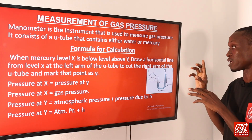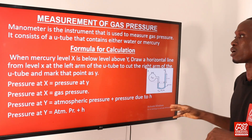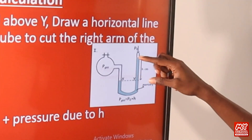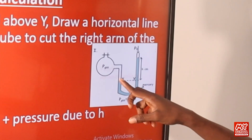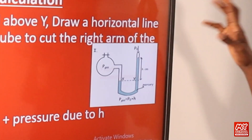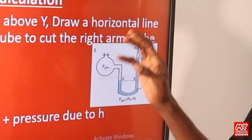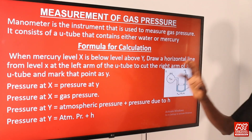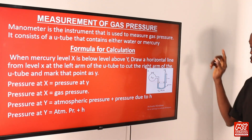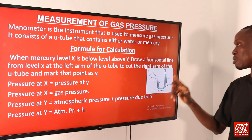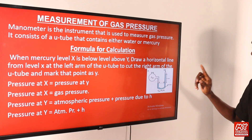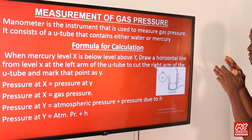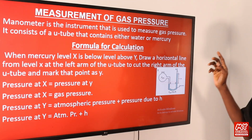We are going to use three cases, each depicted with a diagram as you can see on the screen. Case one: when the mercury level X is below level Y. As you can see in the diagram, the mercury level X in the left arm of the manometer is below the level of mercury Y in the right arm. You draw a horizontal line from X to cut the right arm of the U-tube and mark that point as S. The pressure at point S is equal to the pressure at point Y. The pressure at X is due to the gas pressure, since the left arm of the manometer is connected to a gas supply, while the right arm is exposed to the atmosphere.